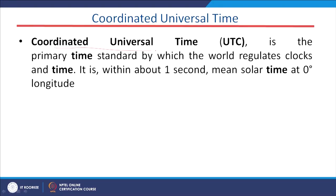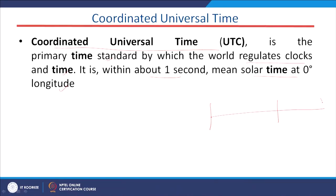UTC stands for Coordinated Universal Time — the primary time standard by which the world regulates clocks and time, within one second of solar time at 0 longitude. Using the UTC concept, phasors V1, V2, V3 across different buses in a network can all be synchronized globally.